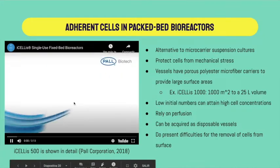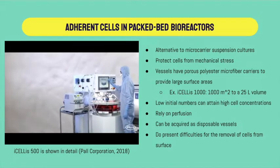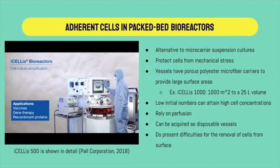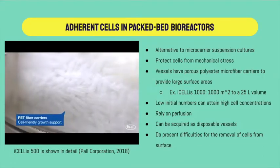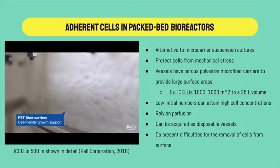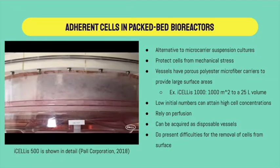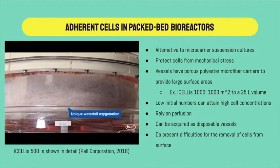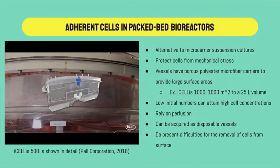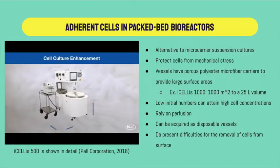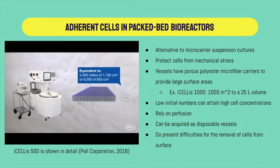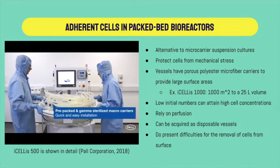An alternative to microcarriers is the use of packed bed bioreactors, which protect cells from mechanical stress. These bioreactors have porous polyester microfiber carriers to provide larger surface areas. An example is the ICLIS-1000, which provides an area of 1,000 square meters in a 25-liter volume. It requires lower initial cell numbers and allows high cell concentrations later in the process. It relies on perfusion and can be acquired as disposable vessels, though they present difficulties for the removal of cells from the surface, making them less suitable when the goal is to generate seeds for further processes.